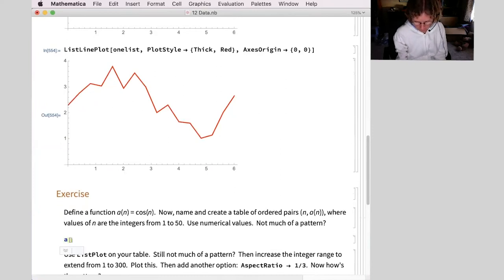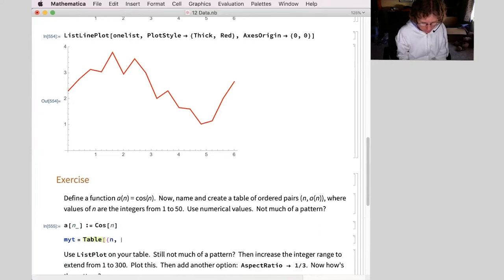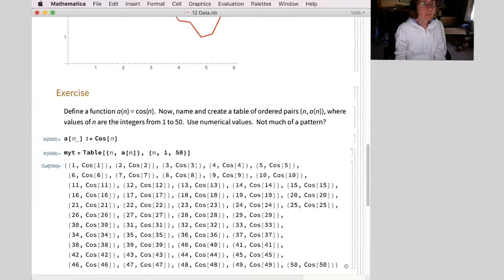So first I'm going to define a function. A of n equals cosine of n. I'm going to put that in. Then I'm going to create a table of ordered pairs from 1 to 50. So let's do that. How about just my table. I'm just going to name that very simply. And table here that I want my ordered pairs n comma a of n. I don't need to use n. I'm just thinking about that because I'm going to put in integers in this case. But any variable will do. And n goes from 1 to 50. Default step size is 1. So that's all I want right now.